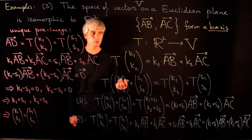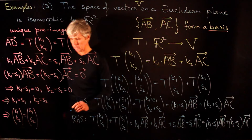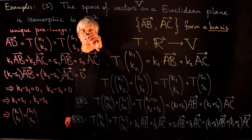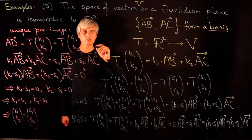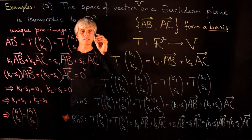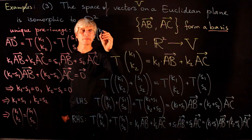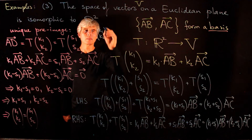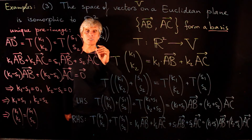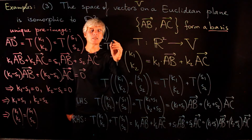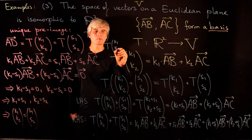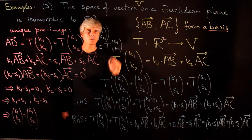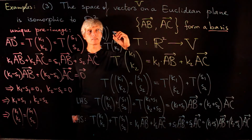The last property is left as an exercise: we need to show T(C·(K1,…,Kn)) = C·T(K1,…,Kn).